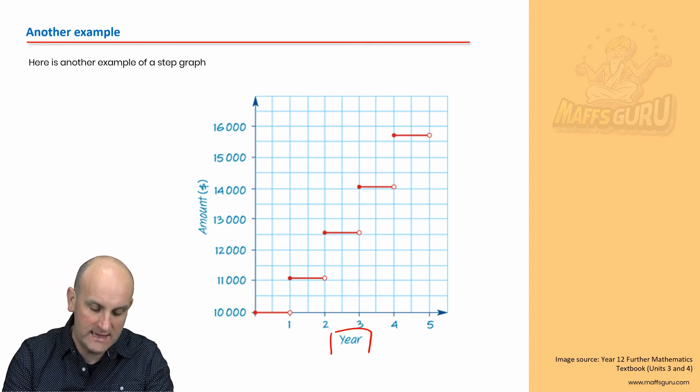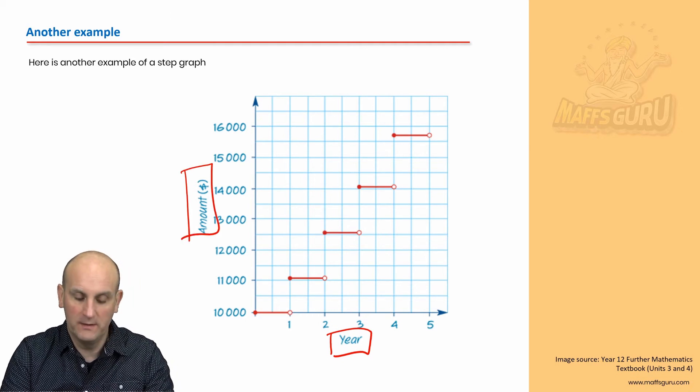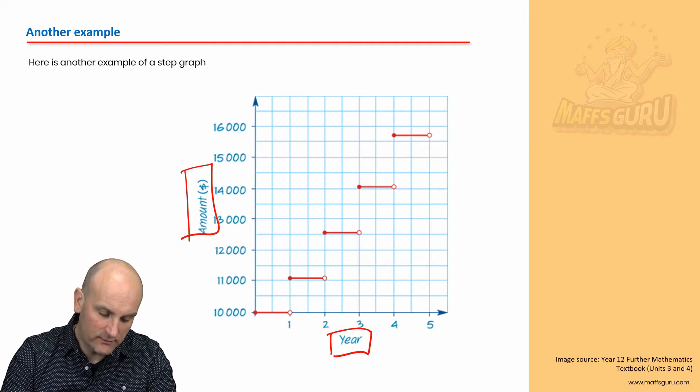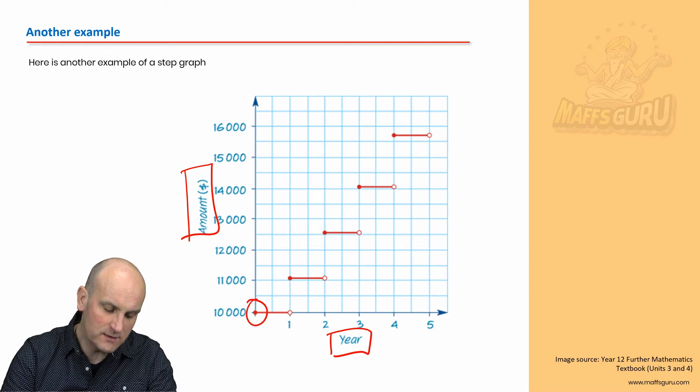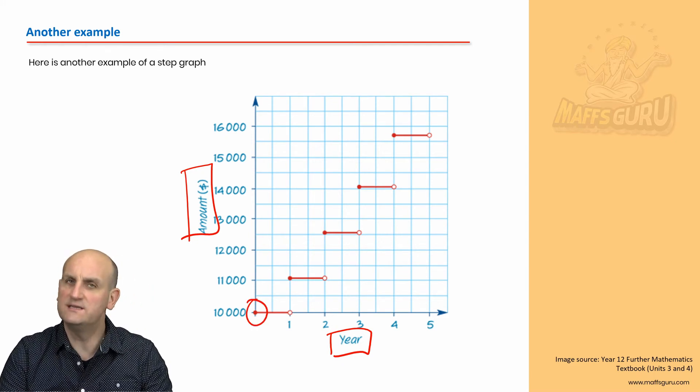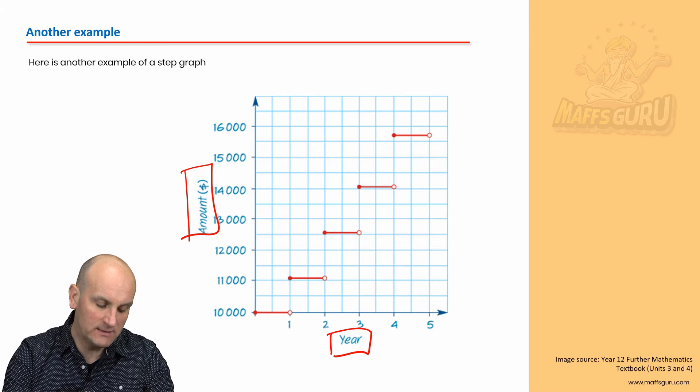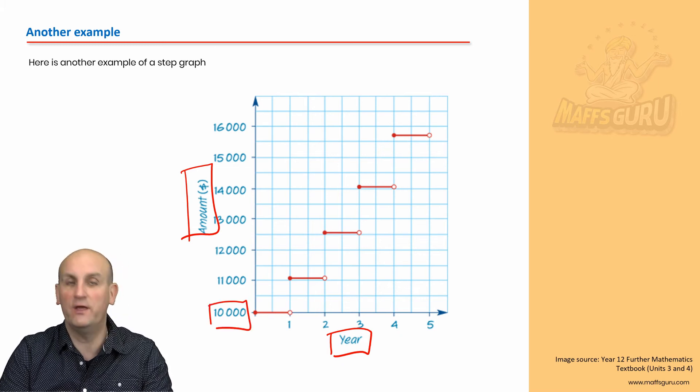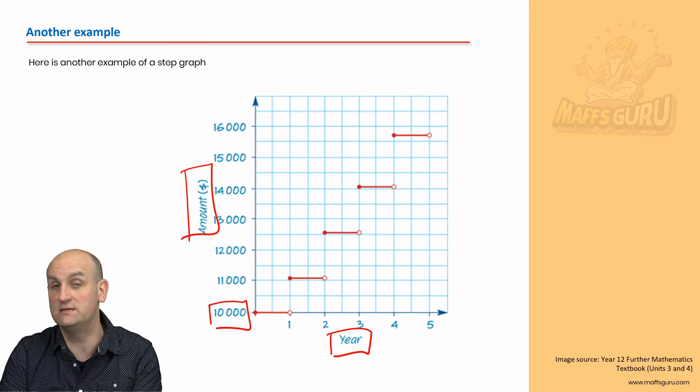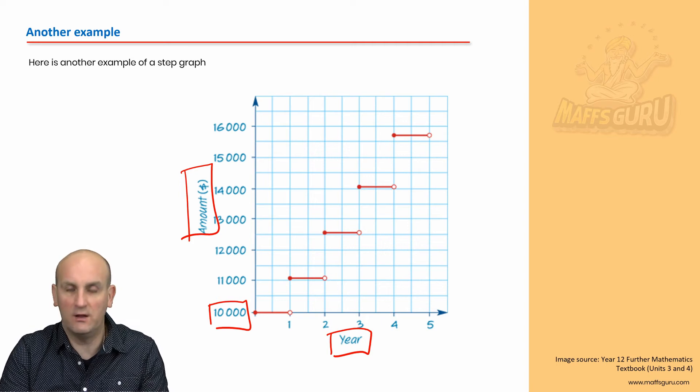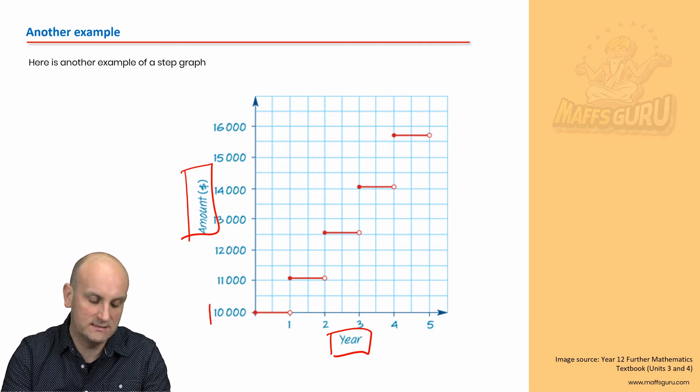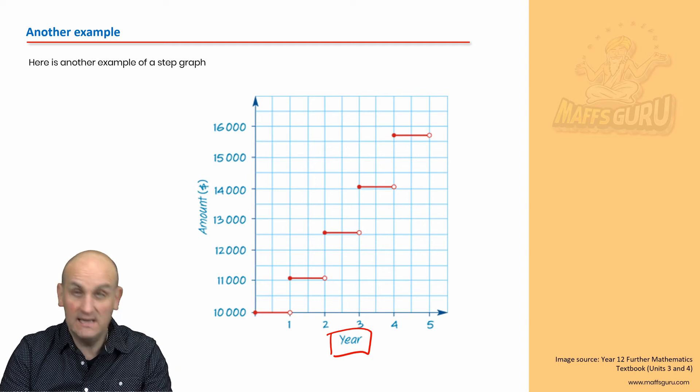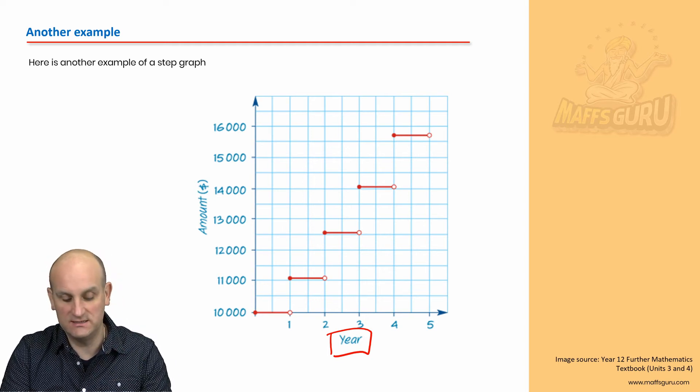What have we got here? We've got a year, and we've got an amount in dollars. So, again, what do we notice? This graph seemingly starts, well, there's no zero here. Why is there no zero? Well, we can see that actually my graph is starting at $10,000. And in the core module on data analysis, you will already have been dealing with graphs that have breaks and bits and pieces in it. So, we don't have to start at zero.